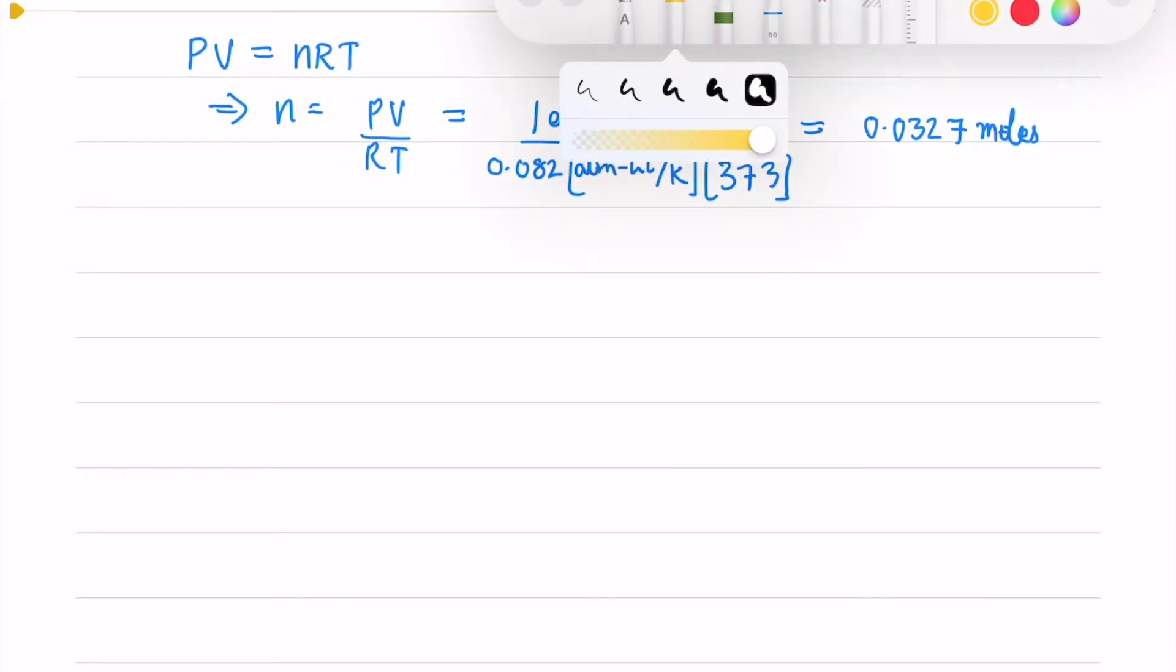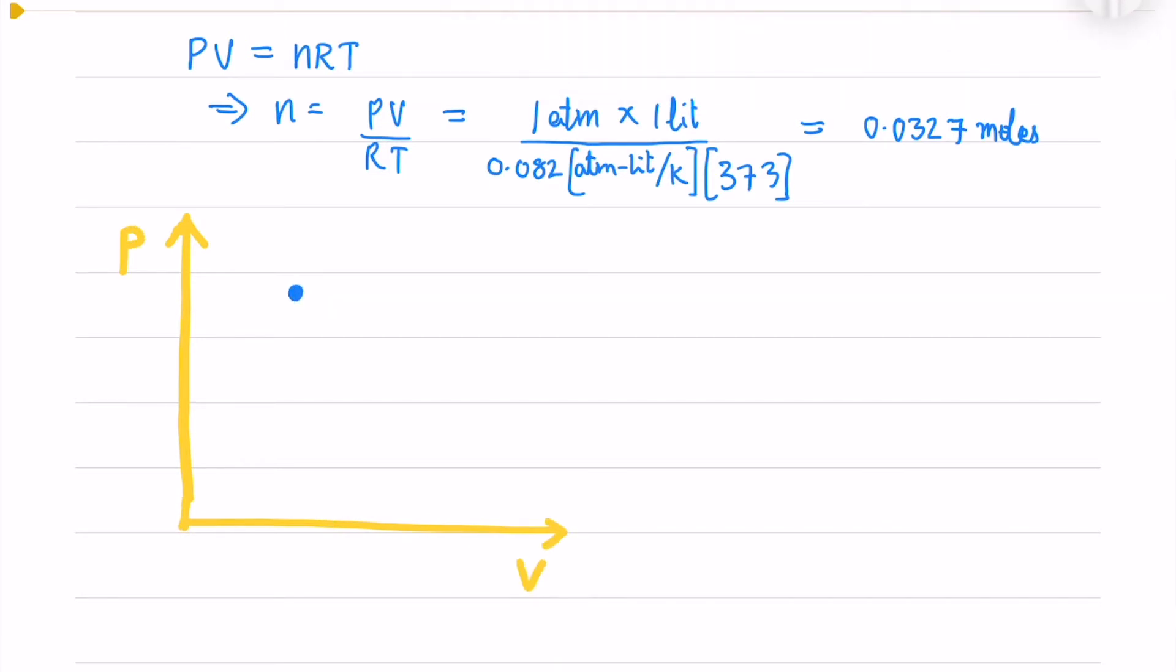Now we'll draw a schematic of the thermodynamic processes that the ideal gas has been taken through. We'll draw a P versus V diagram where it's taken through an isothermal expansion from one liter to two liters.